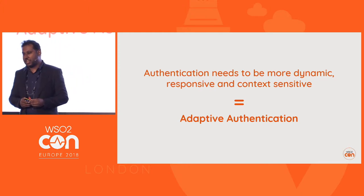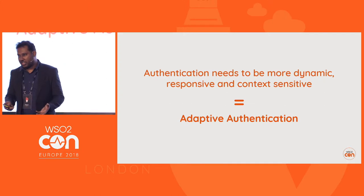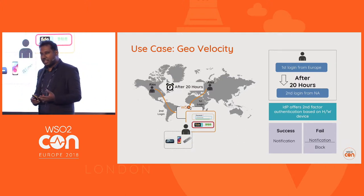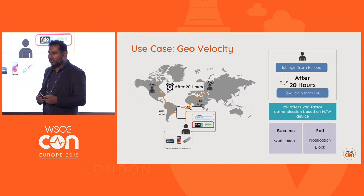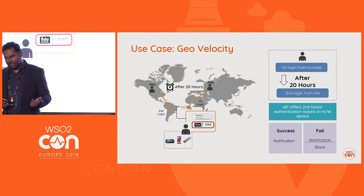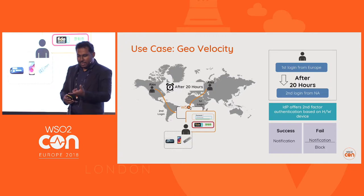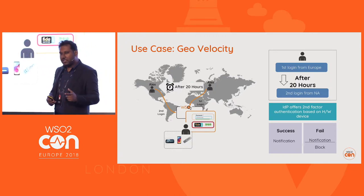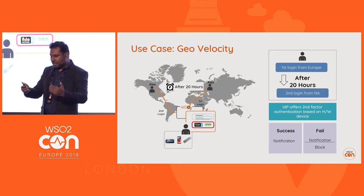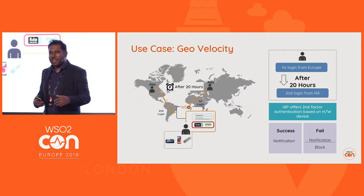The solution is that authentication needs to be more dynamic, more responsive, and more context-sensitive. In other words, we call this adaptive authentication. Let me take a few use cases. Let's take an imaginary user called Alex. Alex logged into a system from London using username and password. After 20 hours, the same user Alex tries to log in to the same system from Nevada or San Francisco. This is a suspicious situation: it is not his default location, and the time between the two logins is only 20 hours. Your identity system should be able to evaluate these factors and increase the security.